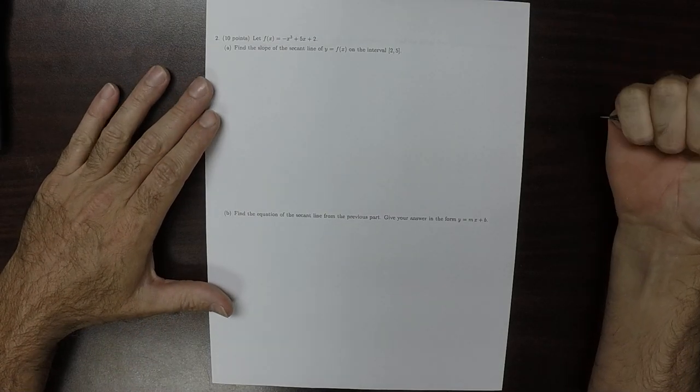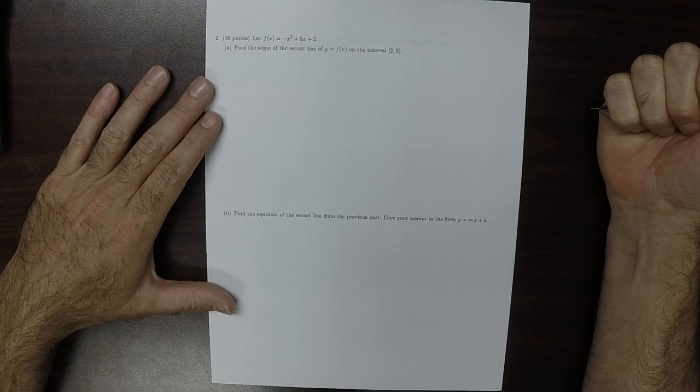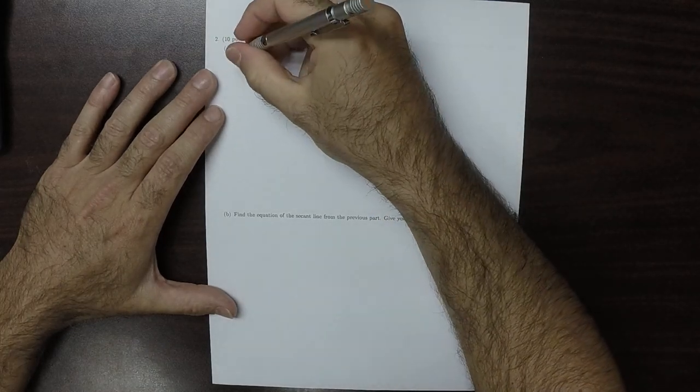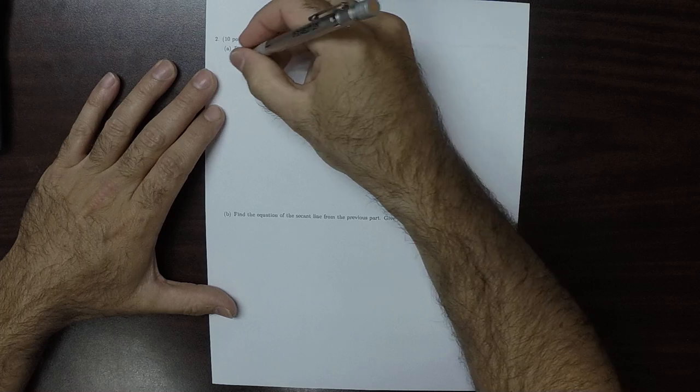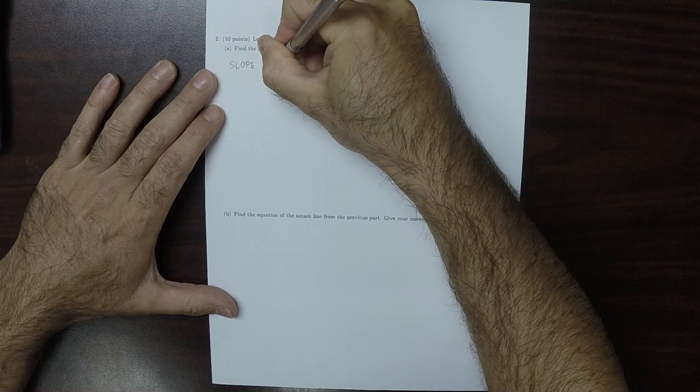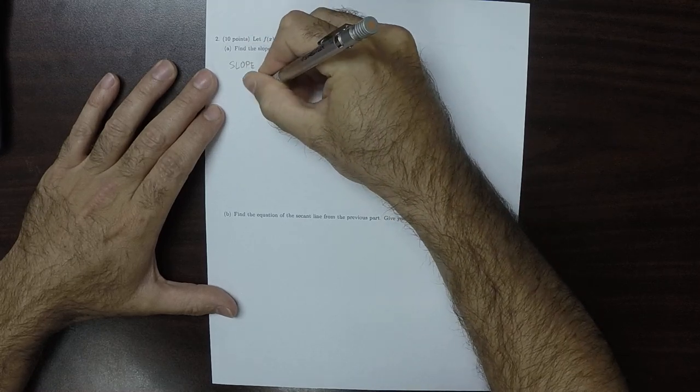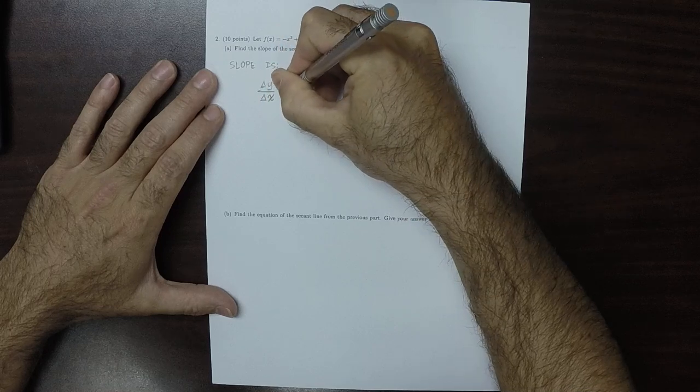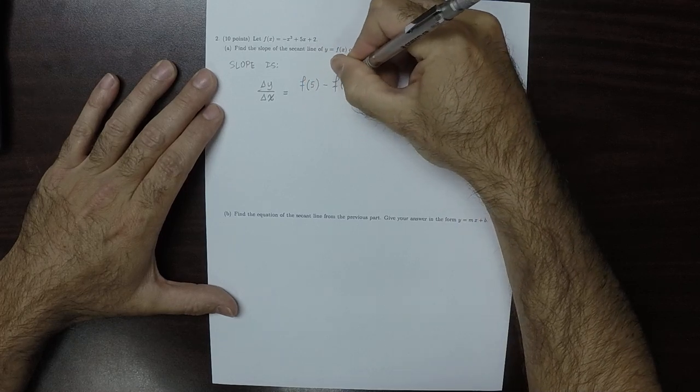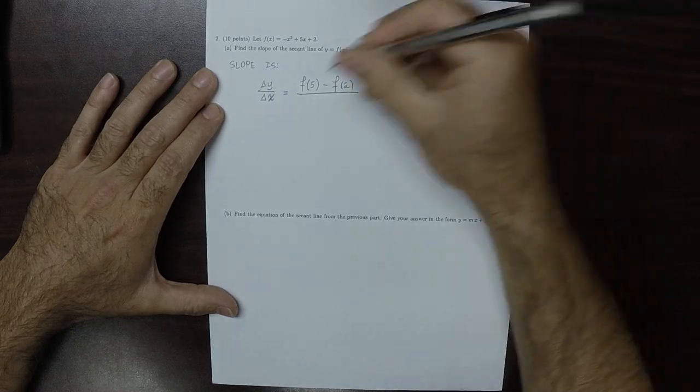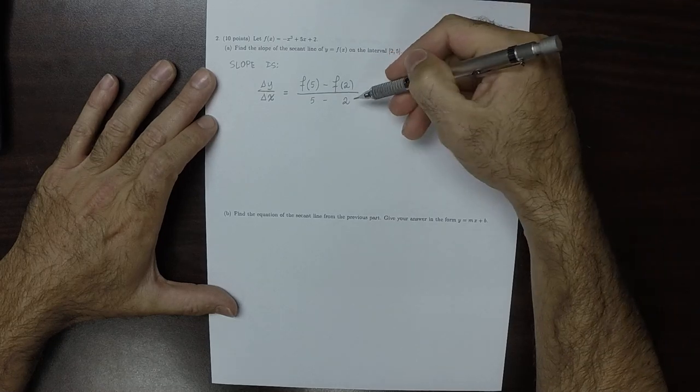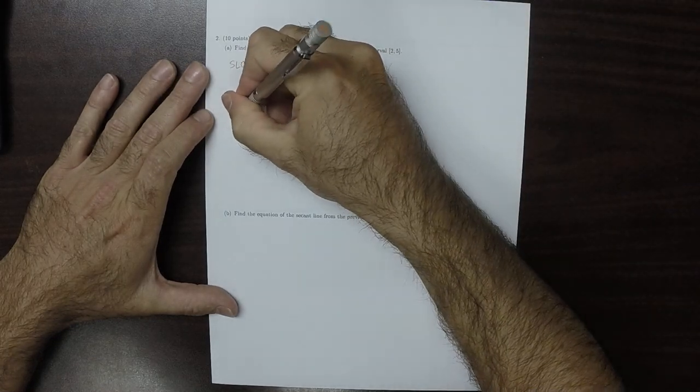Question 2. Find the slope of the secant line. So what's requested here is that we want to compute the slope, which is the change in y over the change in x, which is f of 5 minus f of 2 divided by 5 minus 2. So let's calculate these individually.